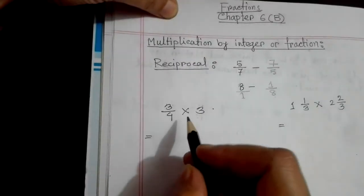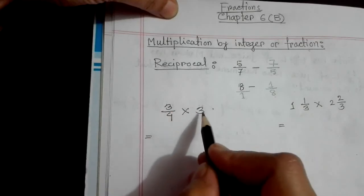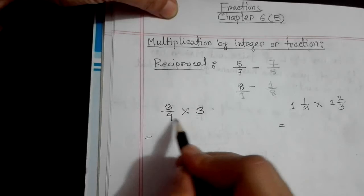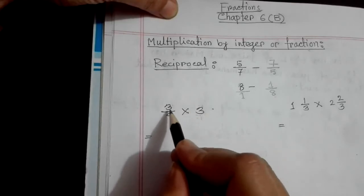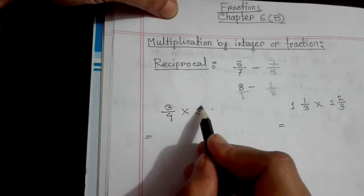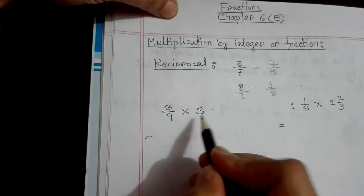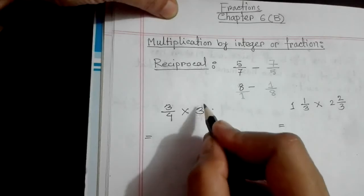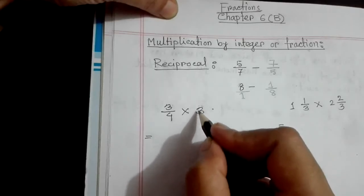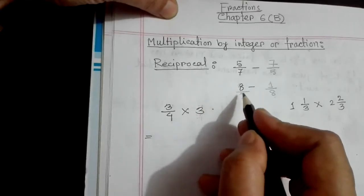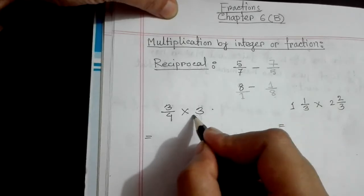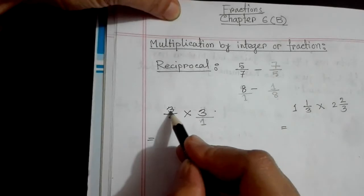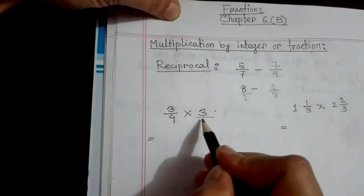Now we will learn how to multiply by integer. 3 by 4 multiply 3. This is an integer. We will show how to multiply a fraction by a whole number. Let's look at our first example.